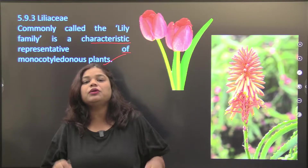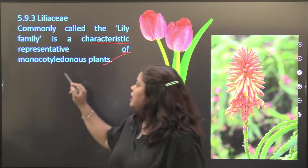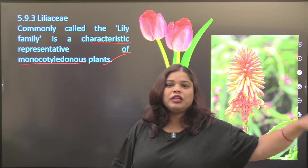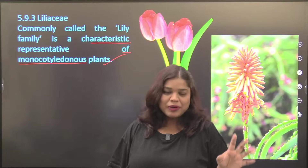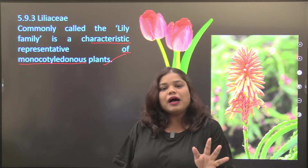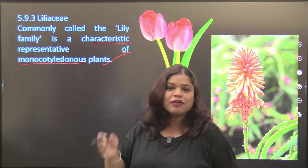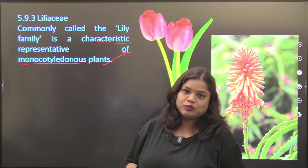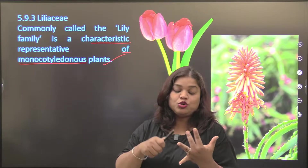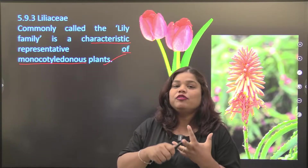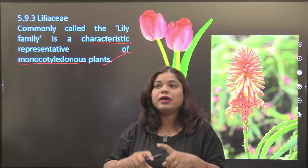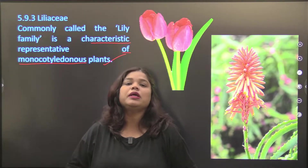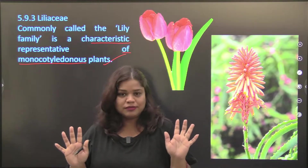So you need to remember: monocots have one cotyledon. That's why we have learned so much — so that when you have these words, you can relate to them. Parallel venation. What is the root? What is your endosperm? How does it form? If you remember the maize seed, you are sorted.